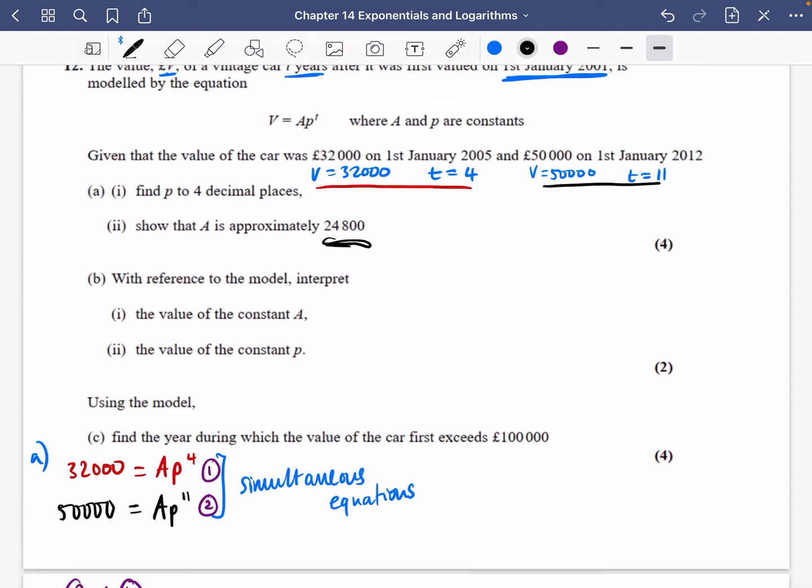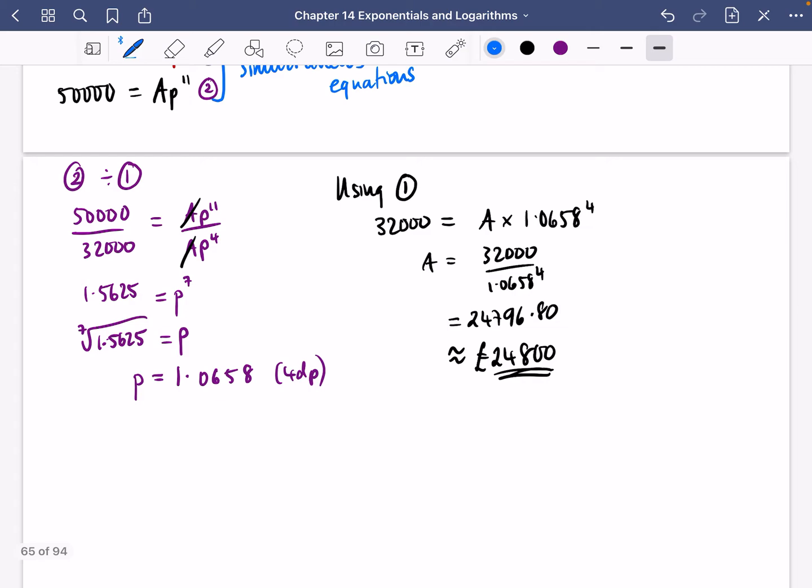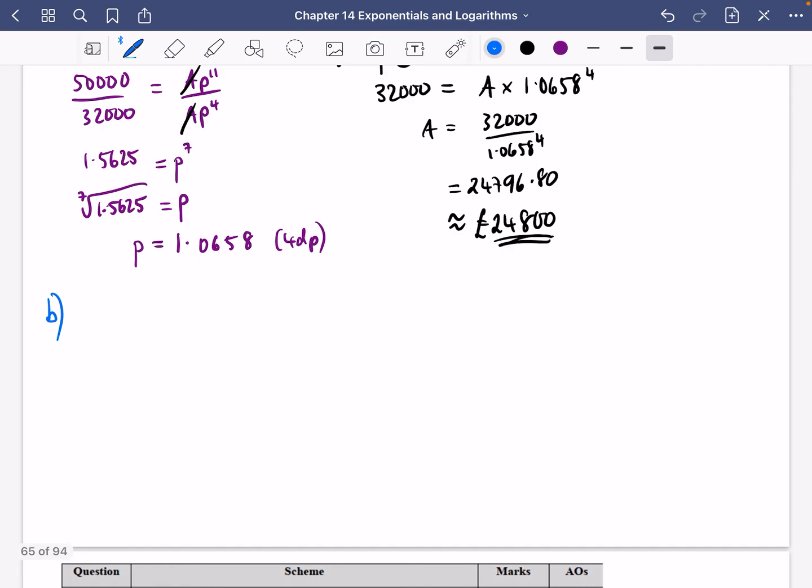Part b says with reference to the model, interpret the value of constant A and constant P. The equation is V = 24,800 × P^t. A is the initial price of the car, and P is the multiplier for the price change each year.